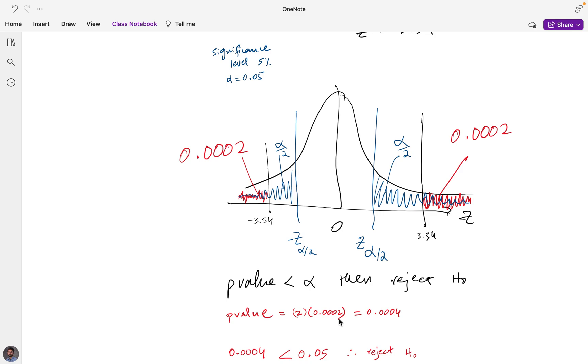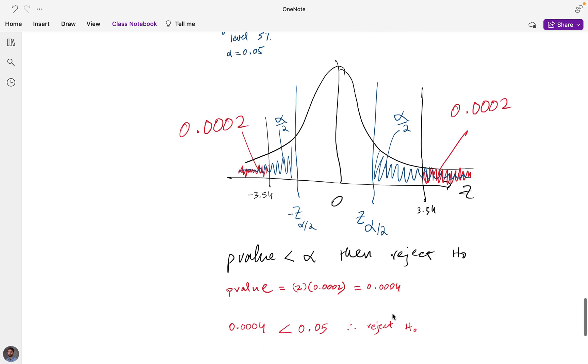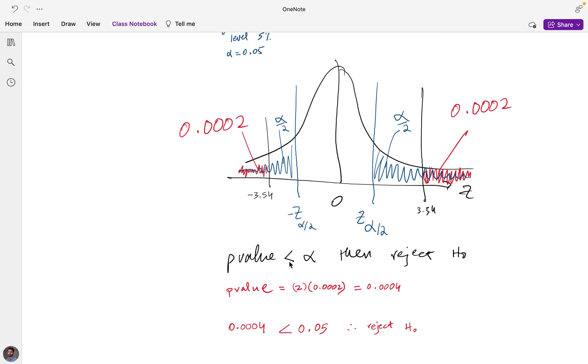The decision rule remains the same. The p-value still needs to be less than alpha to reject the null hypothesis, and 0.0004 is in fact less than 0.05, the alpha value significance level of the test. And therefore we reject the null hypothesis. Now think about this for a second.